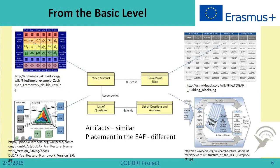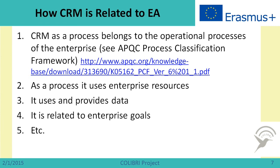As we already discussed in the basic level, the artifacts in different enterprise architecture frameworks are quite similar. Therefore, here we will speak mainly about the artifacts and will not talk about specific enterprise architecture frameworks. Now let us see how enterprise architecture is related to customer relationship management. CRM and enterprise architecture at first sight might be pretty different things, but when we consider that CRM is a process belonging to operational processes of the enterprise, as stated by the American Productivity and Quality Center process classification framework, we can already see the place of CRM in enterprise architecture.